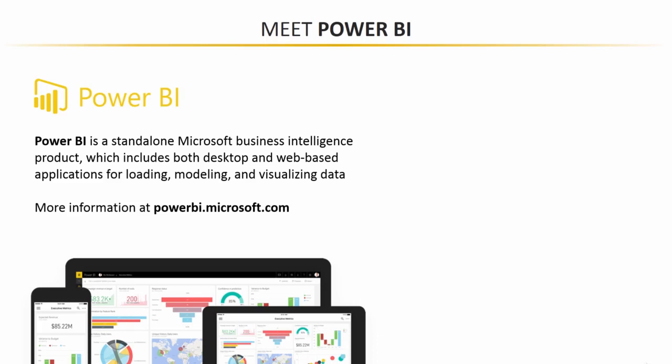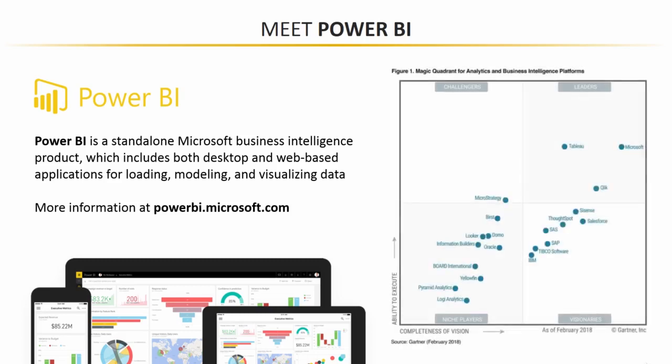There's a ton of additional info if you'd like to learn more at powerbi.microsoft.com. I want to show you something called the Gartner Magic Quadrant. Gartner is a market intelligence research company — they produce these quadrants a few times a year. What we're looking at here is the magic quadrant for analytics and business intelligence platforms specifically, updated February 2018. The idea is that you have completeness of vision on the x-axis and ability to execute on the y. When you break down the players into the four quadrants, you end up with niche players, challengers, leaders, and visionaries.